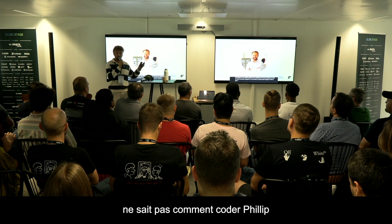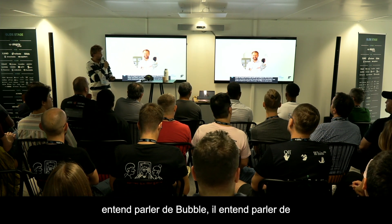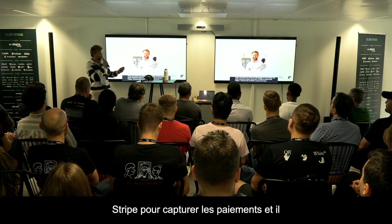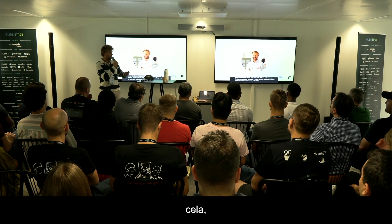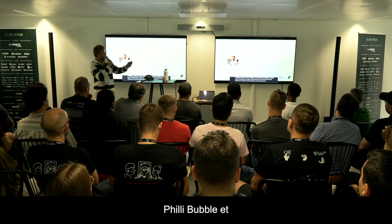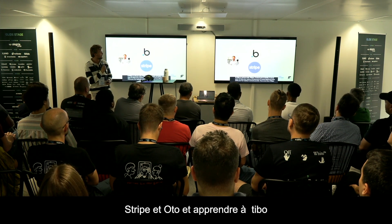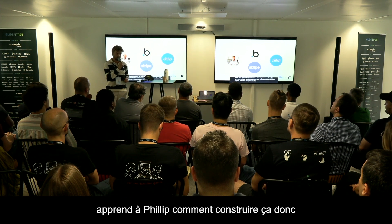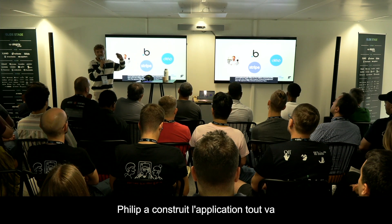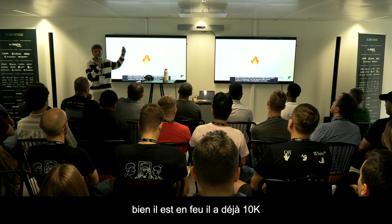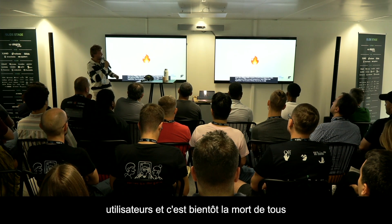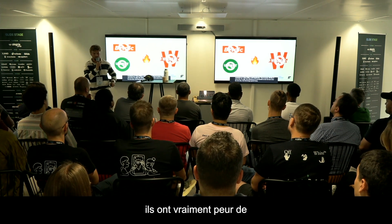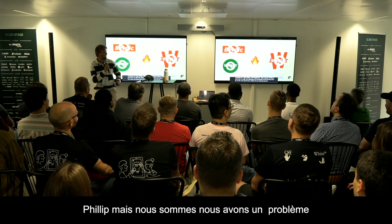Philip is hearing about Bubble, hearing about Stripe for payments, and also about Auto to teach him how to do that — so Thibaut is teaching Philip how to build it. Philip built the app, everything is going well, he's on fire, he already has 10,000 users, and it's soon the death of BetClick, Winamax, and Unibet — they are really afraid of Philip.